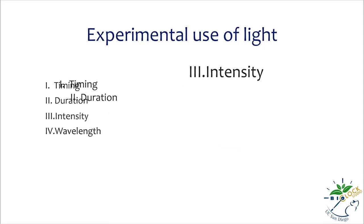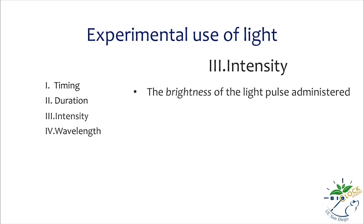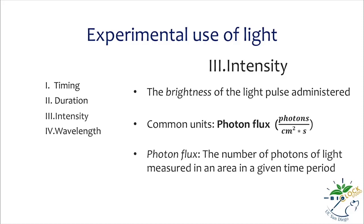The third factor is the intensity of light—the brightness of the light administered. Intensity is commonly expressed in units of photon flux, although light intensity is sometimes reported in other units. Photon flux is the number of photons of light measured in an area in a given time period. For pupil constriction studies, the units are usually photons per centimeter squared per second. Throughout this tutorial, we will be referring to these units as photon flux for our measurement of light intensity.